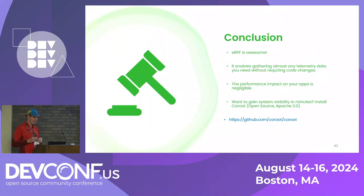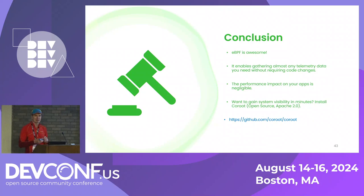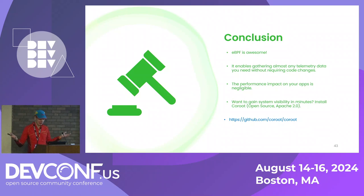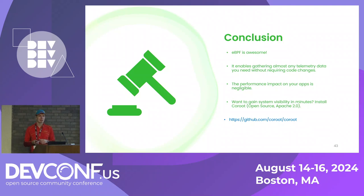So, jumping to conclusions so we have a few minutes for questions: eBPF is awesome — anybody disagrees? No? Good. eBPF really helps us gather a lot of telemetry data without needing to do anything — it's a solution for lazy people, and most of us are lazy people. It also has very limited performance overhead, and there is a huge and growing number of eBPF tools. Coroot is one of them — it's open source, and we would welcome you to give it a try and maybe give us some feedback.